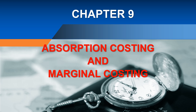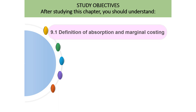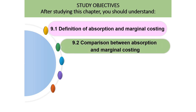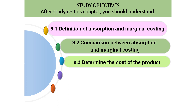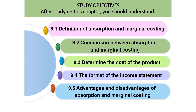Chapter 9: Absorption Costing and Marginal Costing. After studying this chapter, you should understand: 9.1 Definition of Absorption and Marginal Costing, 9.2 Comparison between Absorption and Marginal Costing, 9.3 Determine the Cost of the Product, 9.4 The Format of the Income Statement, and 9.5 Advantages and Disadvantages of Absorption and Marginal Costing.